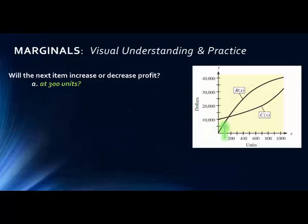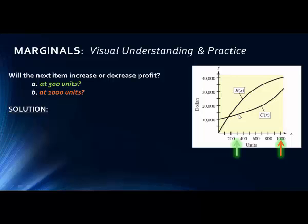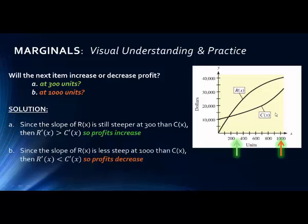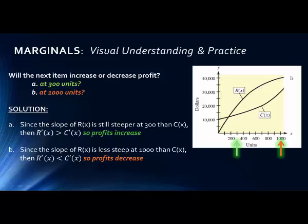Let's look at two more cases: will the next item increase or decrease profit at 300 units and at 1000 units? At 300, the slope of the revenue function is still steeper than the slope of the cost function, so profits continue to increase. At 1000 units, the revenue function is leveling out while costs are steepening, so the rate of change of profits is decreasing — meaning profits are growing more slowly.